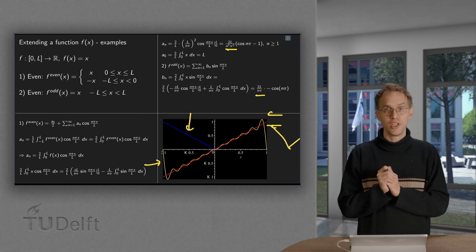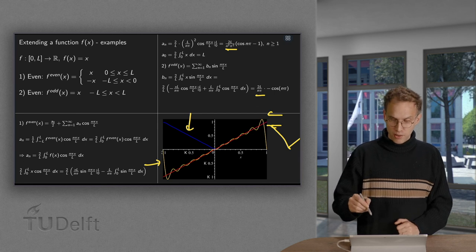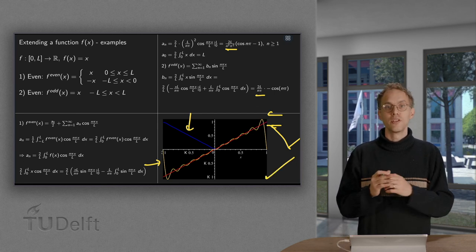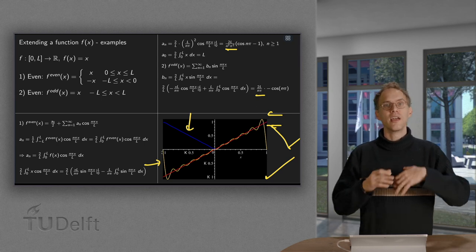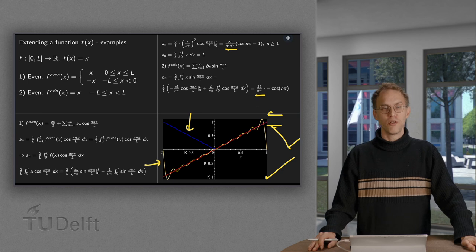So the even extension is continuous. Whereas for the odd extension, we have these jumps here. So we have some problems at jump points. So that is why the convergence for the even function is better than for the odd one.